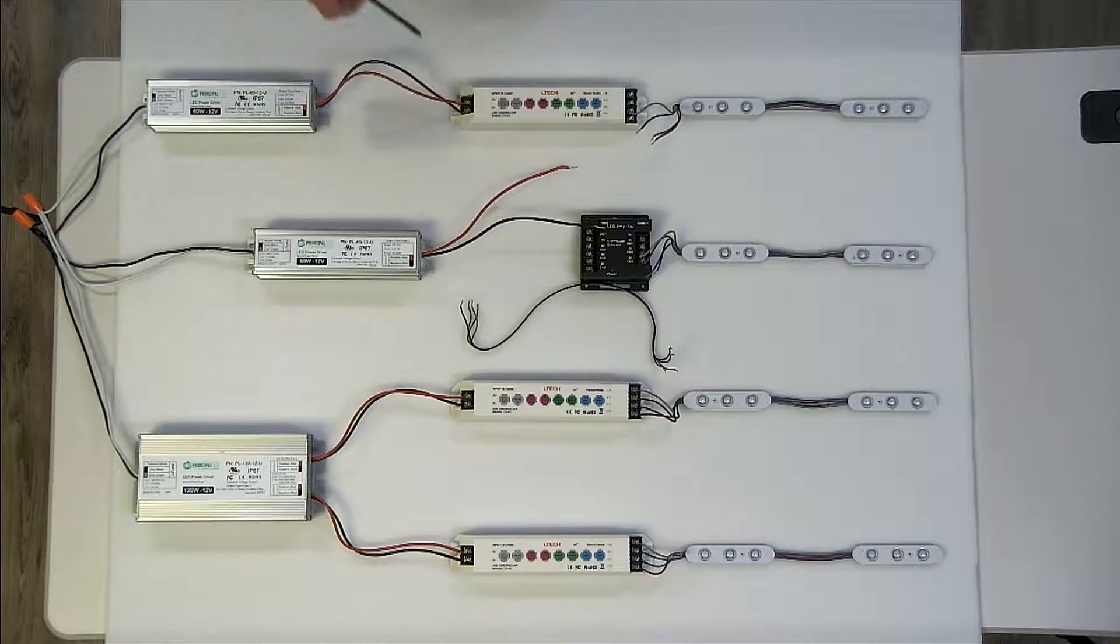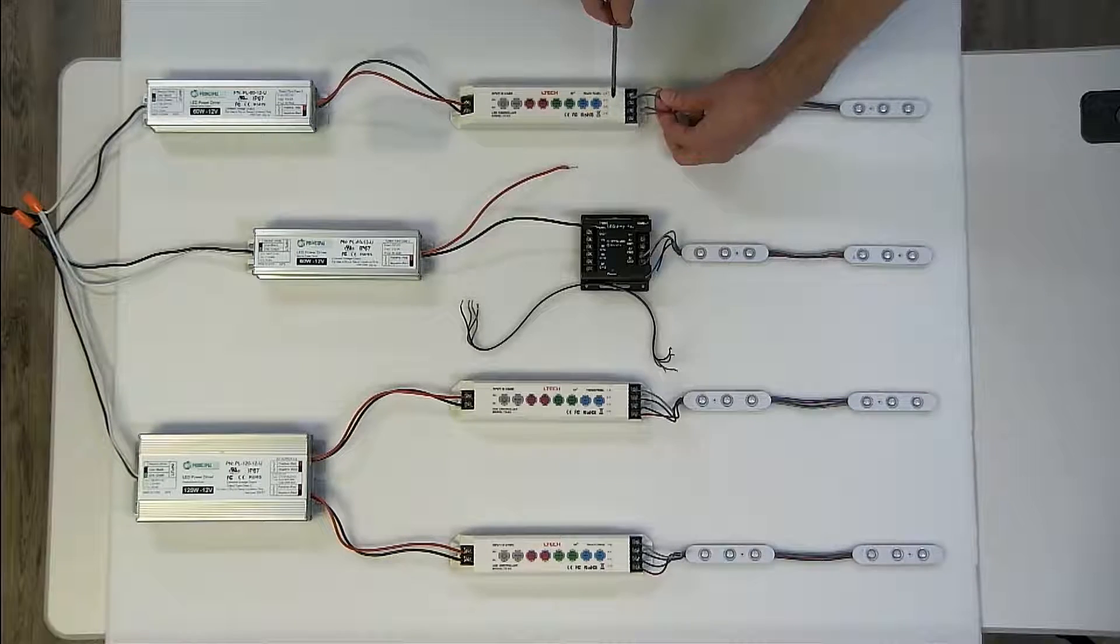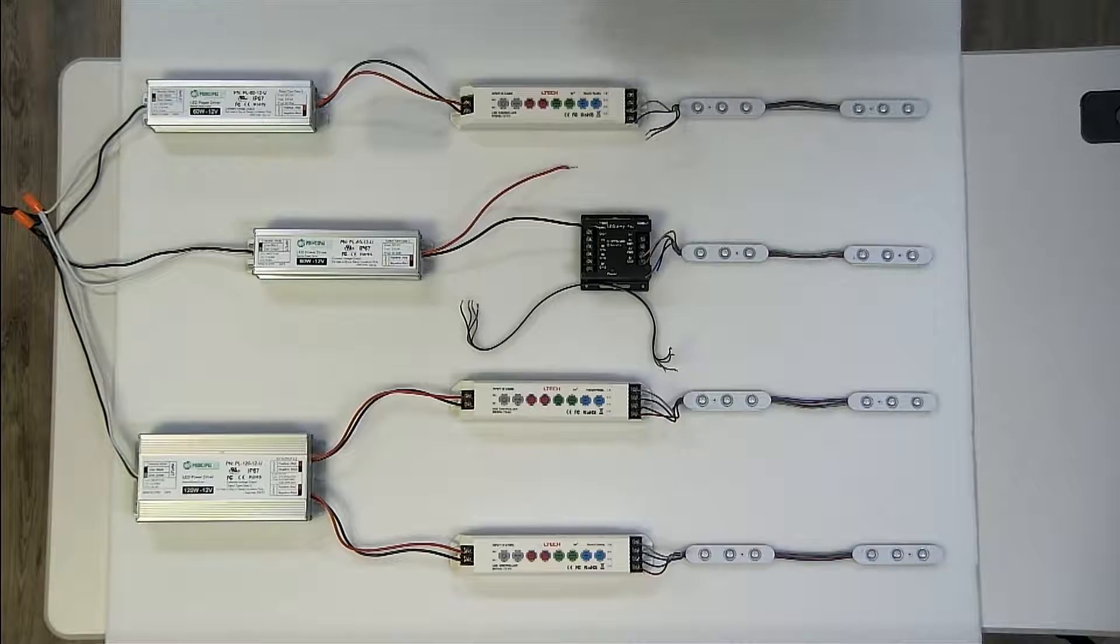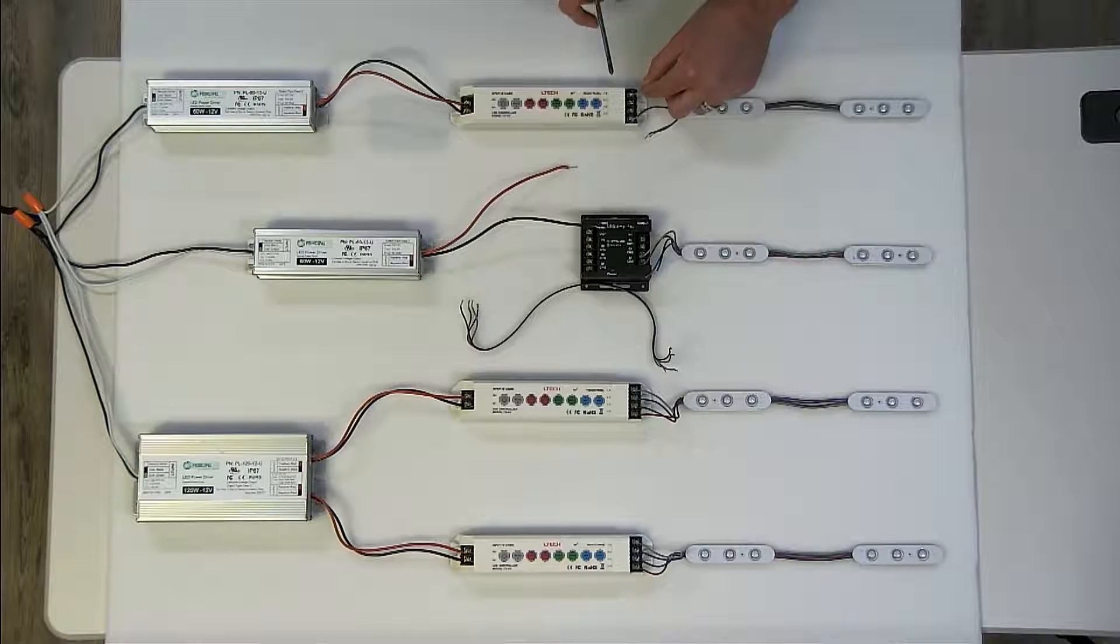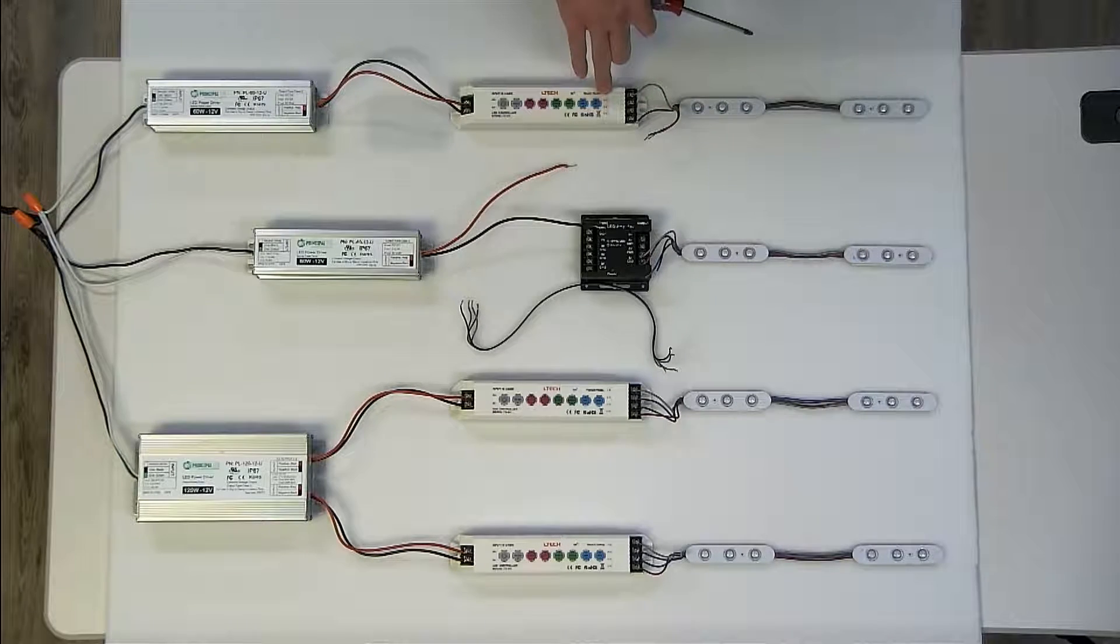Once those are secure, you will come to the output side and accordingly color code and match each of the wires from the module or light tape into each of the terminals. The top one is always going to be your positive, which is your gray wire, followed by blue, green, and red.